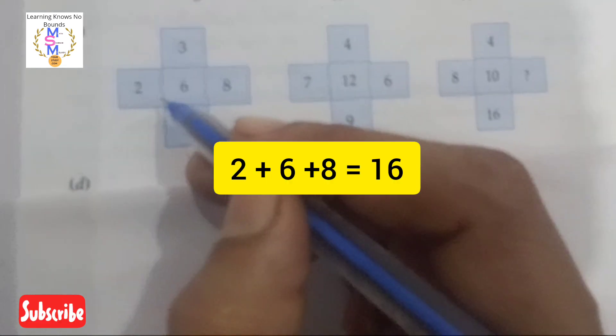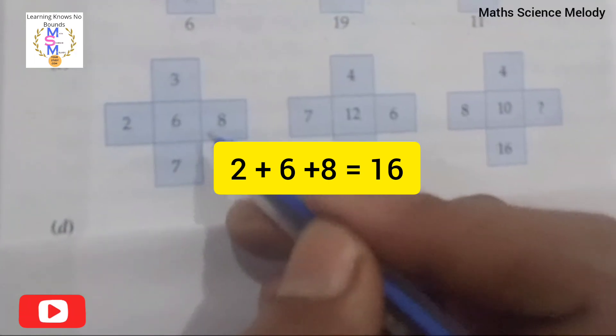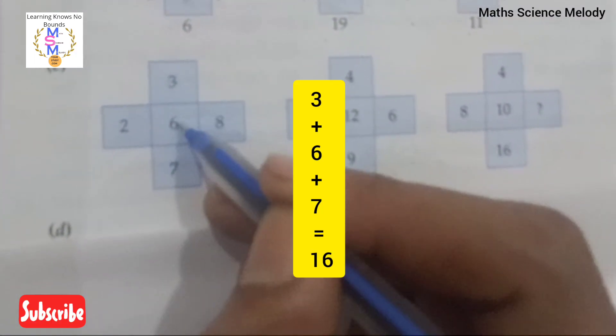Same: two plus six equals eight, eight plus eight equals sixteen. Here also, if you do addition, three plus six equals nine, nine plus seven equals sixteen. Means this sum should be equal.